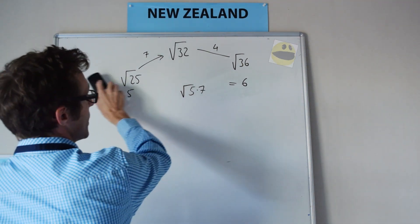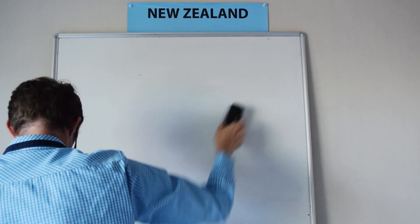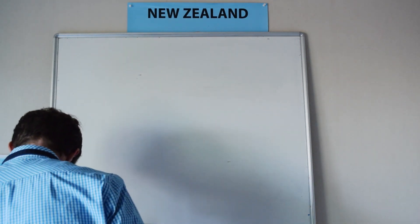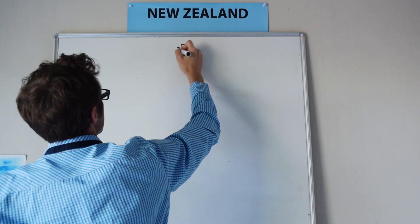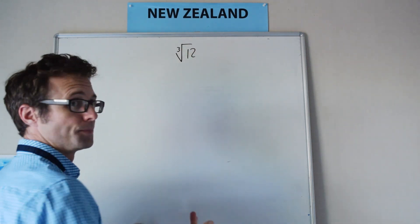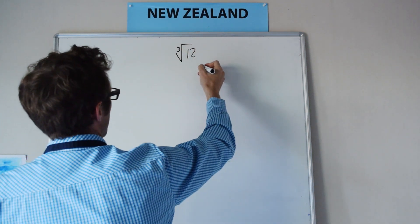We could also try another one with a cube root this time. So let's say we have the cube root of, say, 12.